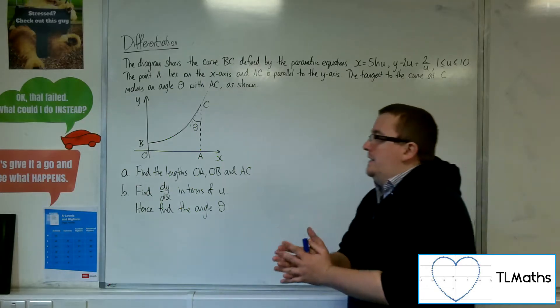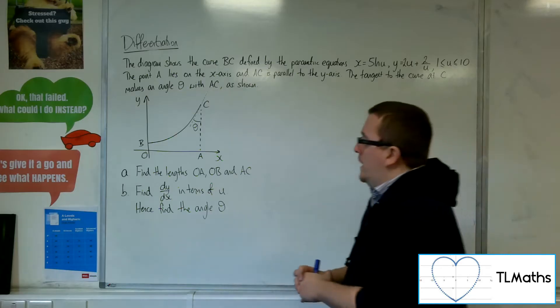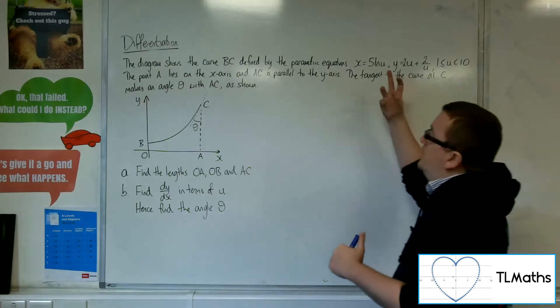So first of all, what we need to do is find the lengths OA, OB, and AC. So this is really interpreting the equations and the curve.